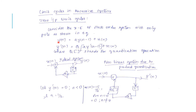Why is it called zero input limit cycles? In recursive systems, if the system output enters a limit cycle, it will continue to remain in the limit cycle even when the input is made zero. The system output remains in the limit cycle until another input of sufficient magnitude is applied to drive the system out of the limit cycle.